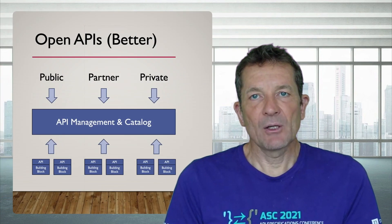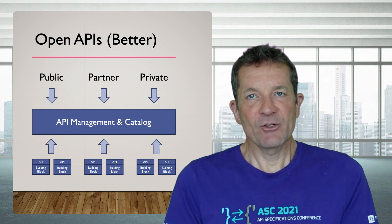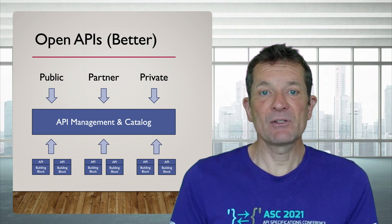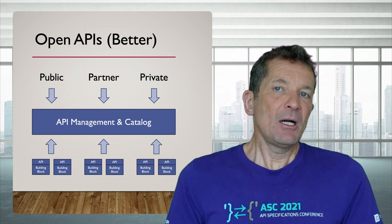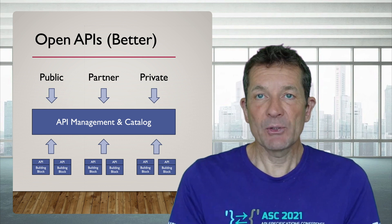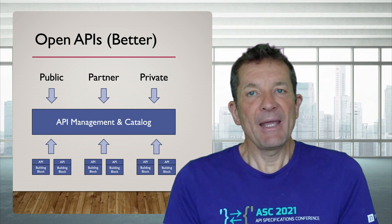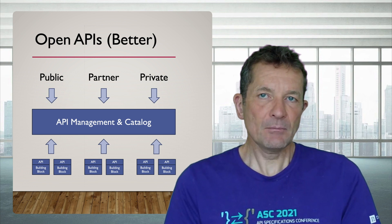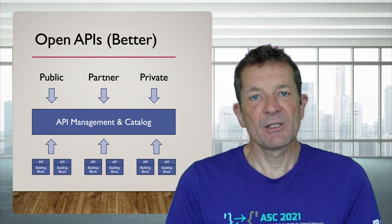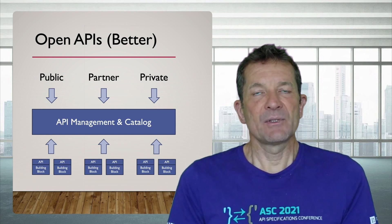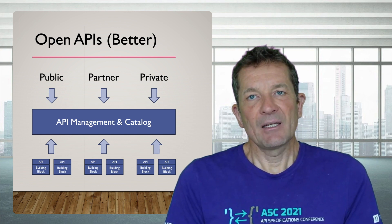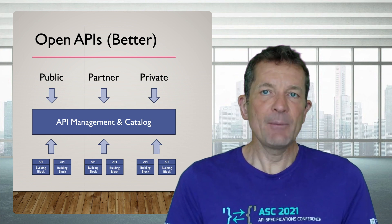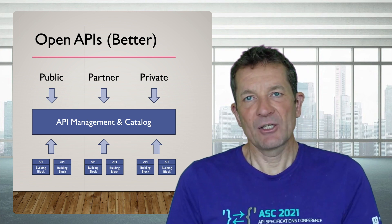A more modern and better approach is to go through an API management solution that provides a catalog. In this pattern, all digital building blocks expose APIs that are published into an API management component, which then makes APIs available to consumers — again, potentially public, partner, and private. This is where modern API management stands today, with many products announced around catalogs and unified API management.